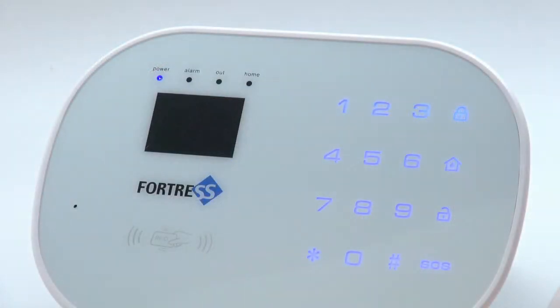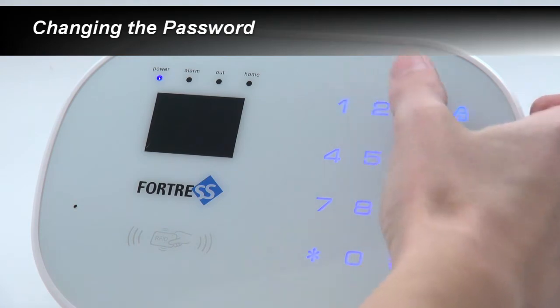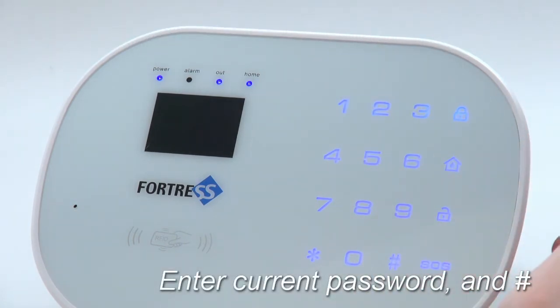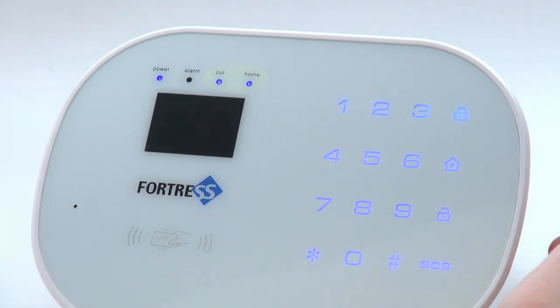To change the password, first enter the default password of 1234 and press pound. Once the out and the home lights come on, we're in programming mode.